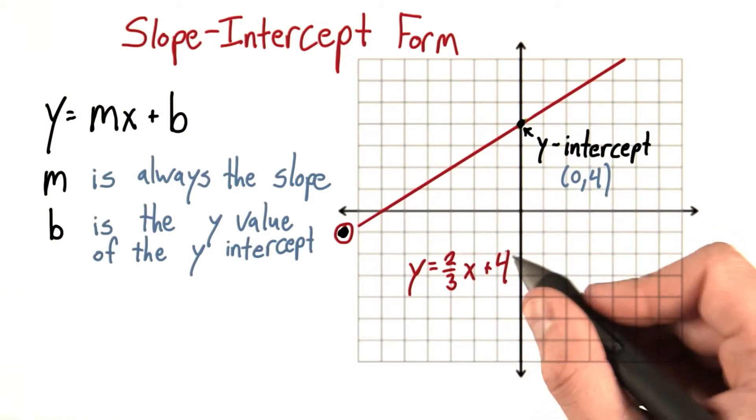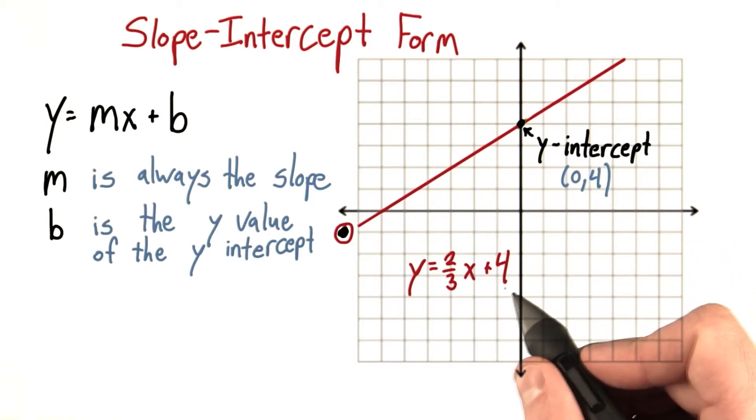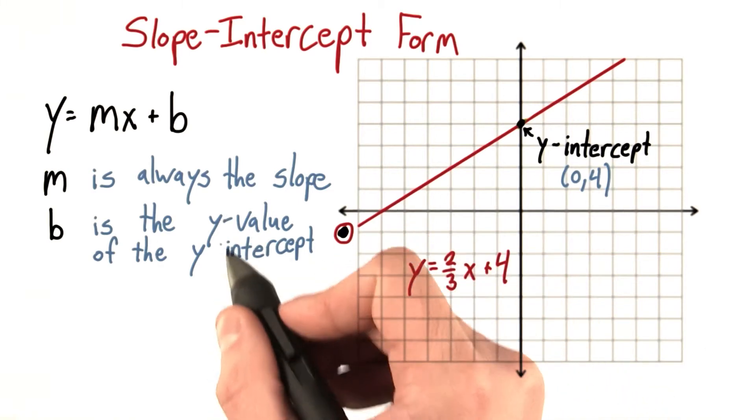In the future, I may sometimes just call this the y-intercept, 4, but really it's more appropriate to say it's the y-value of the y-intercept.